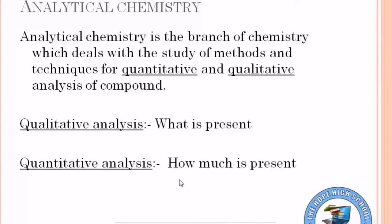Analytical chemistry is the branch of chemistry which deals with the study of methods and techniques for quantitative and qualitative analysis of compounds. Analytical chemistry میں ہم ان methods اور techniques کی study کرتے ہیں جن کے ذریعے ہم کسی بھی compound کی quantitative اور qualitative analysis کر سکتے ہیں۔ Qualitative analysis کا مطلب ہے کیا موجود ہے، اور quantitative analysis کا مطلب ہے کتنا موجود ہے۔